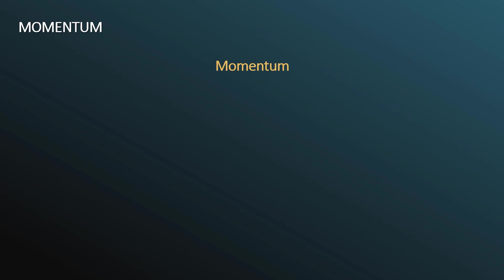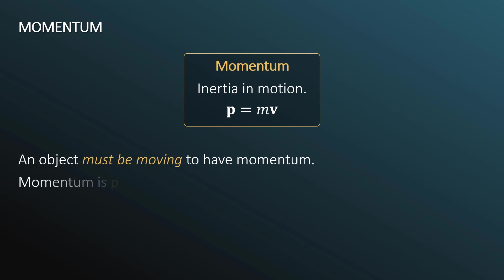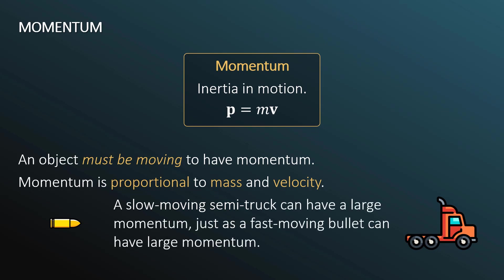So, momentum. How is momentum defined? The textbook calls it inertia in motion. I would just say it's mass in motion. Simply put, momentum is the mass of our object multiplied by the velocity of that object. An object must be moving to have momentum. Momentum is proportional to mass and velocity — if I increase the mass or increase the velocity, my momentum also increases. This also means that two objects of completely different mass can have the same momentum. For example, a slow-moving semi-truck can have a large momentum, just as a fast-moving bullet can.